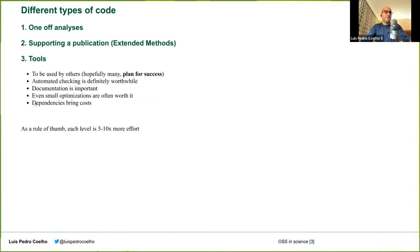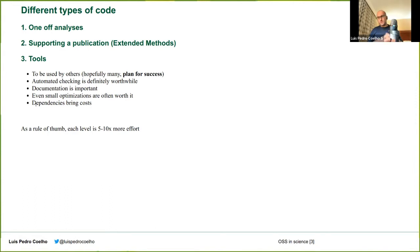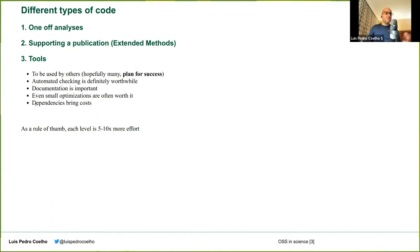The next step — and most of my talk is about this — is when we make tools: software that other people will use. We plan for success, because that means hopefully many people will be using it. Here it's really important to have very extensive documentation. We want to be sure that if we make a mistake in one of our papers, that's kind of bad, but if we release a tool that causes mistakes in everybody else's papers, that's much, much worse. This is where we bring on automated checking, continuous integration, and similar machinery. Here, even small optimizations can be worth it. As a rule of thumb, every time you move up a level — from one to two and from two to three — that's about 10x more effort.